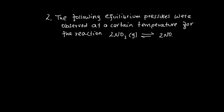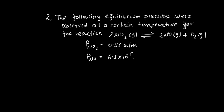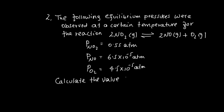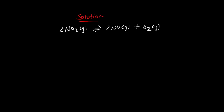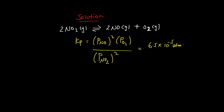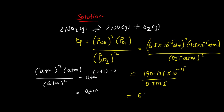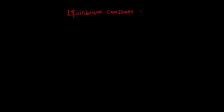The following equilibrium pressures were observed at a certain temperature for the reaction 2NO2 ⇌ 2NO + O2. Pressure of NO2 = 0.5 atm, pressure of NO = 6.5 × 10⁻⁵ atm, pressure of O2 = 4.5 × 10⁻⁵ atm. Calculate the equilibrium constant Kp at this temperature. Kp equals partial pressure of NO to the power of 2 times partial pressure of O2, divided by partial pressure of NO2 to the power of 2.